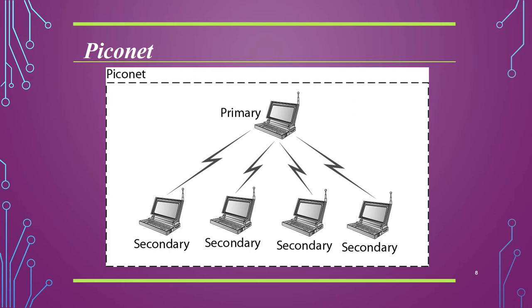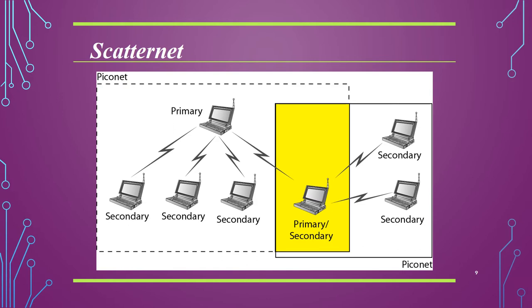A secondary in a park state is synchronized with the primary but cannot take part in communication until moved from that state. The second category is called a Scatternet. As shown in the figure, one piconet is connected with another — one slave acts as the master of another piconet. A scatternet is formed by combining several such piconets. It is the linking of multiple co-located piconets through sharing of a common master or slave device. A device can be both master and slave. The maximum capacity is 720 kbps per piconet.